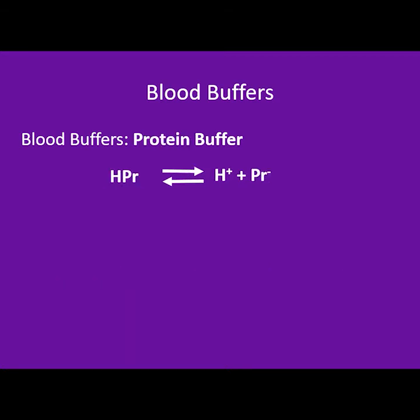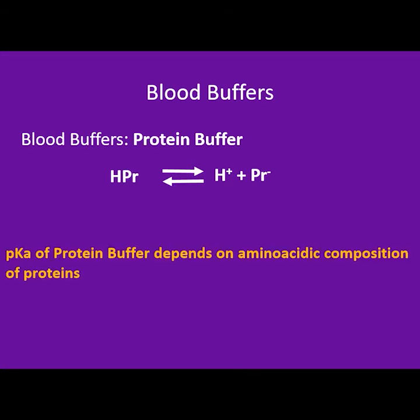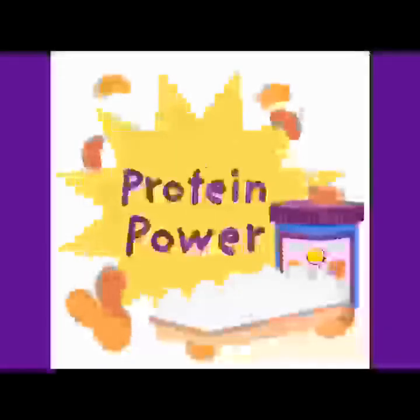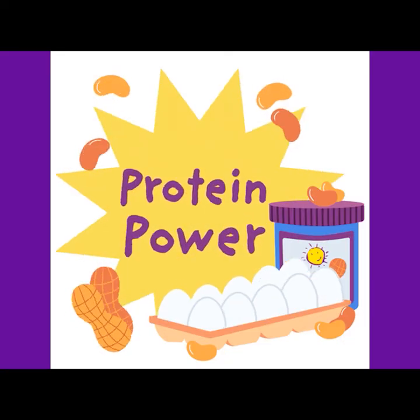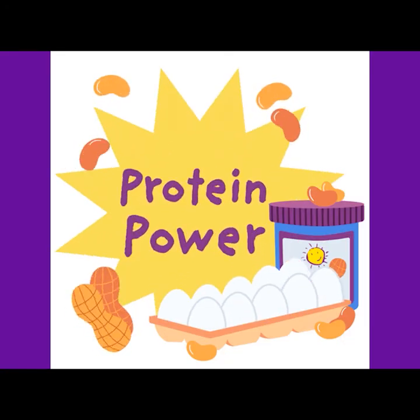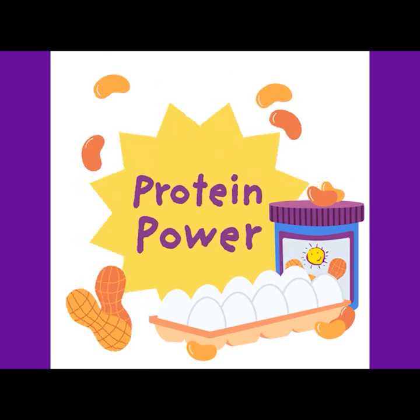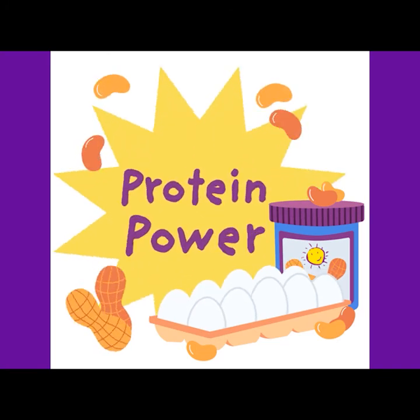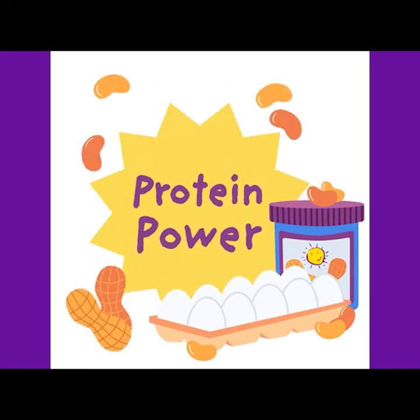Finally, we have proteins. Every protein has an acidic form and a base form, but the pKa of a protein buffer depends on its amino acid composition. An important key point: if you cannot synthesize blood proteins, the capacity of the blood to buffer pH changes will decrease.